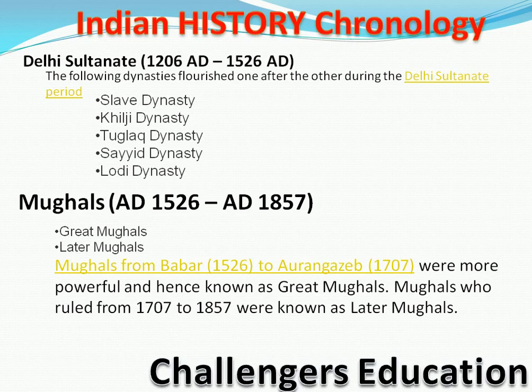Jaise hi British aaye, baad wale jo rulers the woh aapas mein ladne lage aur wo apni Mughal ki legacy nahi sambhal paaye. Neeche Sikhs ne unhe tang kiya, phir Marathas ne tang kiya. In sab ne Mughals ko decline karte gaye. Jo bhi 1707 se 1857 tak ka period rahega — that will be Later Mughals.